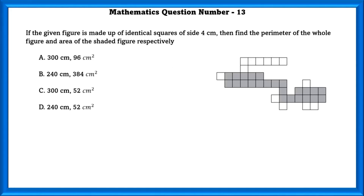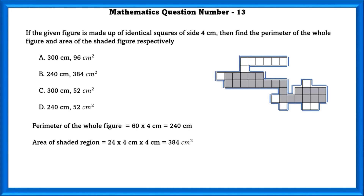Mathematics question number 13. If the given figure is made up of identical squares of size 4 cm, find the perimeter and area of the shaded figure. Since perimeter is the boundary of the figure, we calculate it by counting the sides and multiplying by 4. Perimeter equals 60 sides times 4 cm, which is 240 cm. The area of the shaded region is 24 times 4 times 4, which equals 384 cm².